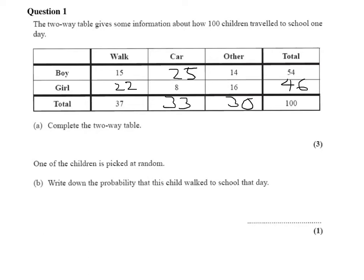Now we just want to check our totals all work out. Does 15 and 25, which is 40, and 14 make 54? Yes it does. Does 22 and 8 and 16 make 46? Well, 22 and 8 is 30, and 30 and 16 is 46. So the table is complete.